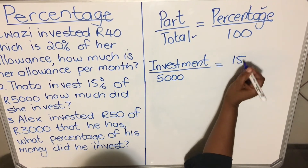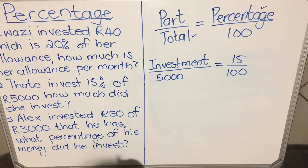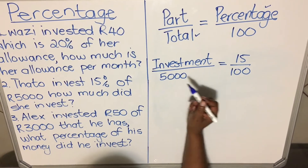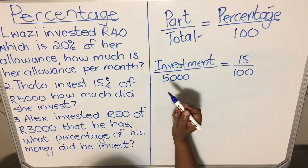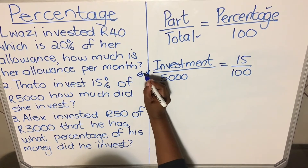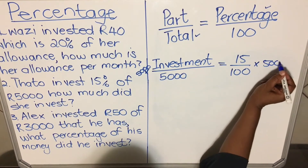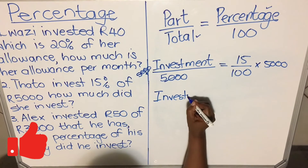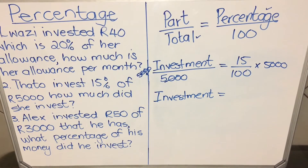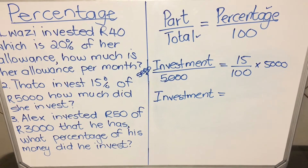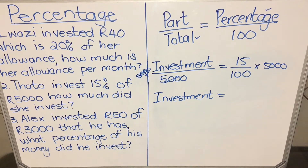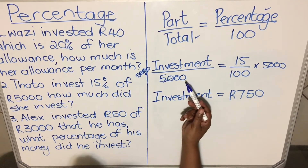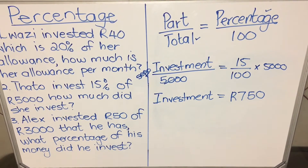So: investment divided by 5000 equals 15 divided by 100. I want to leave investment alone, so I multiply both sides by 5000 — the 5000 cancels on the right side — and I'm left with: investment equals 15 divided by 100 multiplied by 5000. On the calculator that gives 750. So if she invests 15% of 5000, she is investing 750 rand.